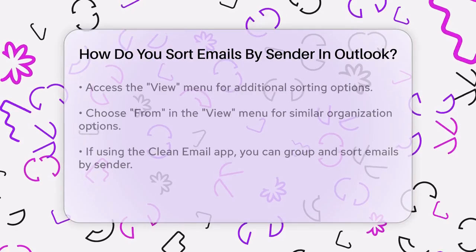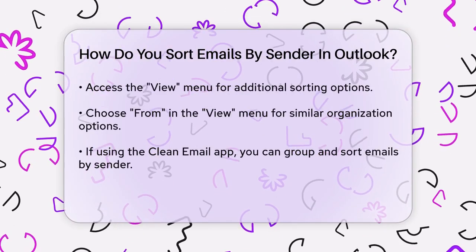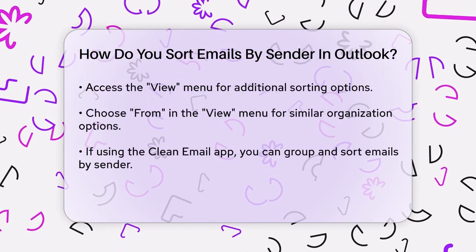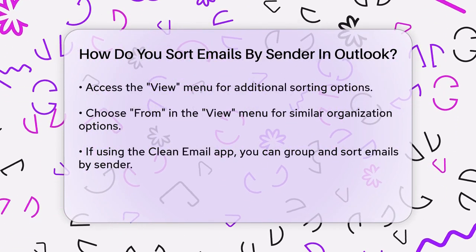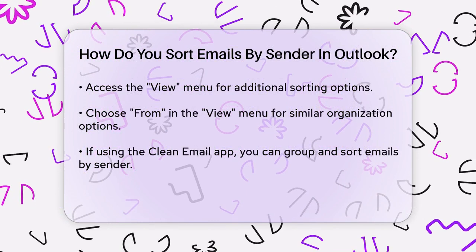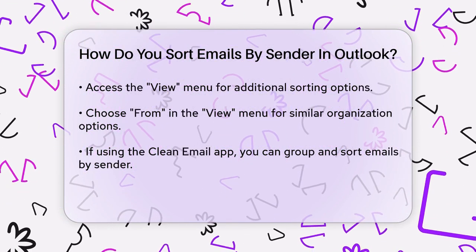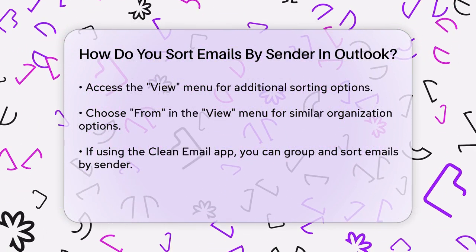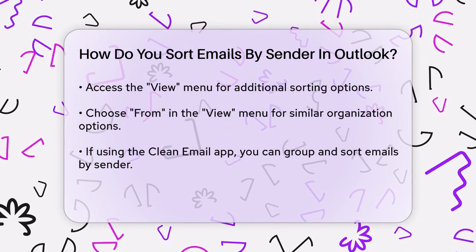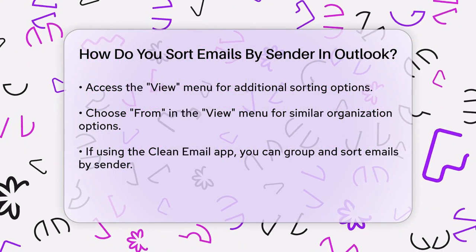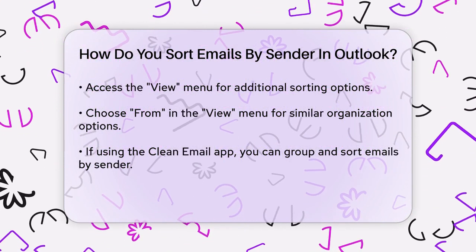If you want to take it a step further, you can also use the View menu. Go to the menu bar, select View, and then choose the same options for organization, such as From. This will give you the same sorting options as the Quick Access dropdown.